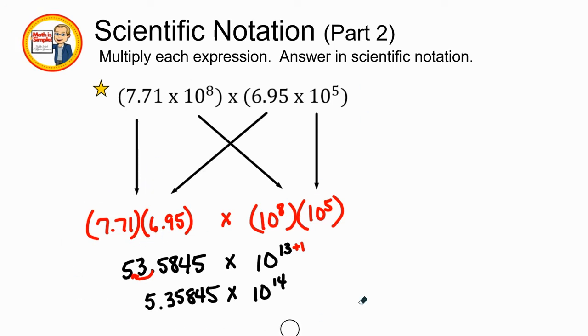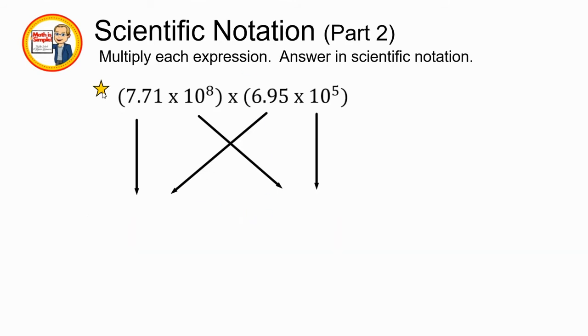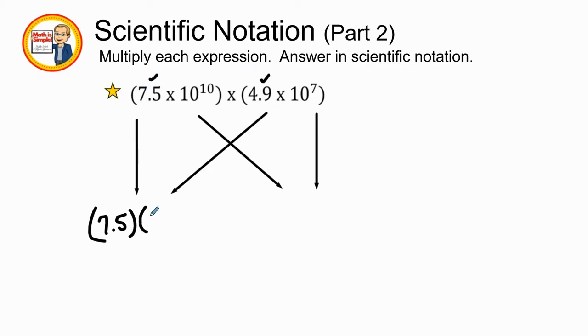Here we go. Example number three. You guys are getting very good at this, I can tell. Sending positive vibes your way. Here we go. 7.5 times 4.9. Being very organized is super important. And so here we go with 10 to the 10th power times 10 to the 7th power.